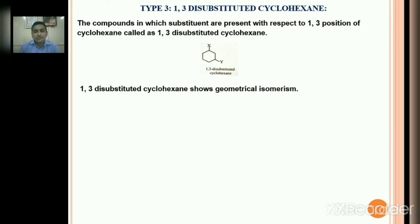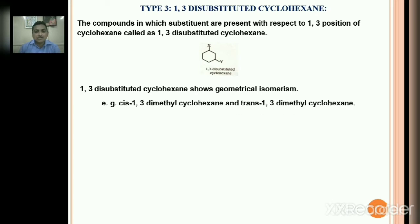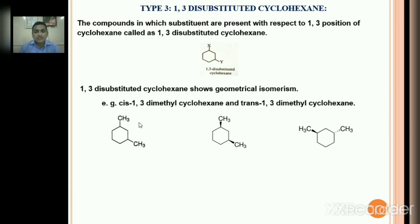Let us consider a simple example: 1,3-dimethylcyclohexane. 1,3-dimethylcyclohexane shows geometrical isomerism — one is cis-1,3-dimethylcyclohexane and another geometrical isomer is trans-1,3-dimethylcyclohexane. In the cis isomer, methyl is up at C1 and methyl is also up at C3 — both methyl groups are on the same side, that's why it is called cis.